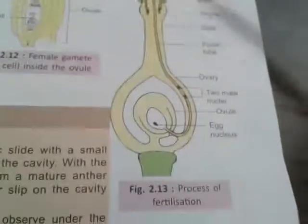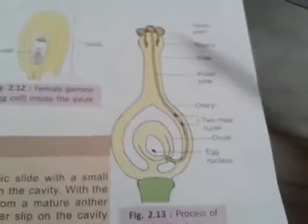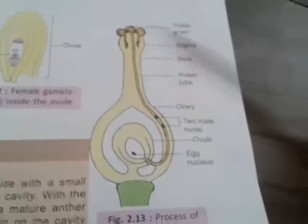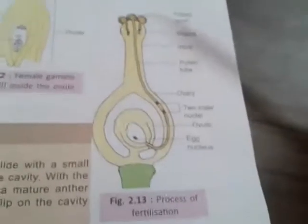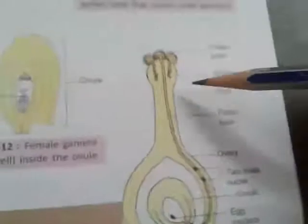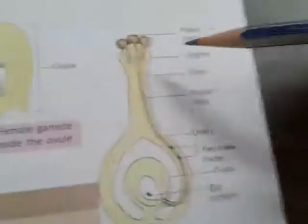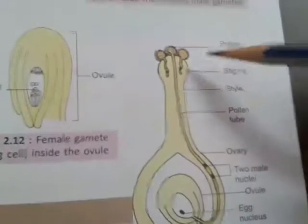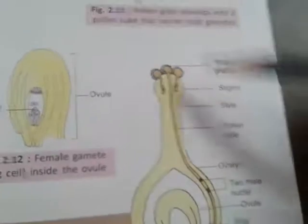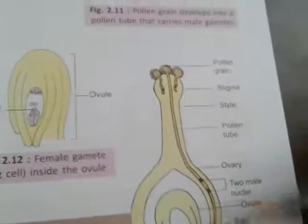During fertilization, the following events take place. First, the pollen grains germinate on the stigma and pollen tubes develop. The pollen tubes move into the style, and the pollen tubes are the carriers of the male gametes. So the anther contains the pollen grains, and these pollen grains from the anther come onto the stigma of the female part.